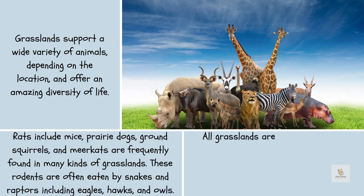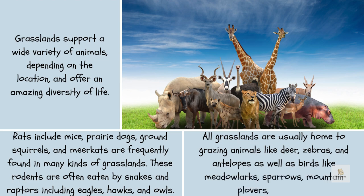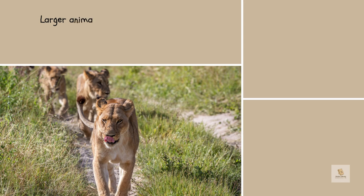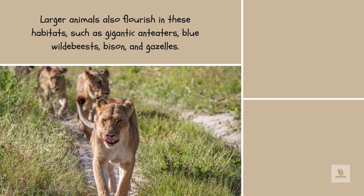All grasslands are usually home to grazing animals like deer, zebras, and antelopes, as well as birds like meadowlarks, sparrows, mountain plovers, and larks. Larger animals also flourish in these habitats, such as giant anteaters, blue wildebeests, bison, and gazelles.